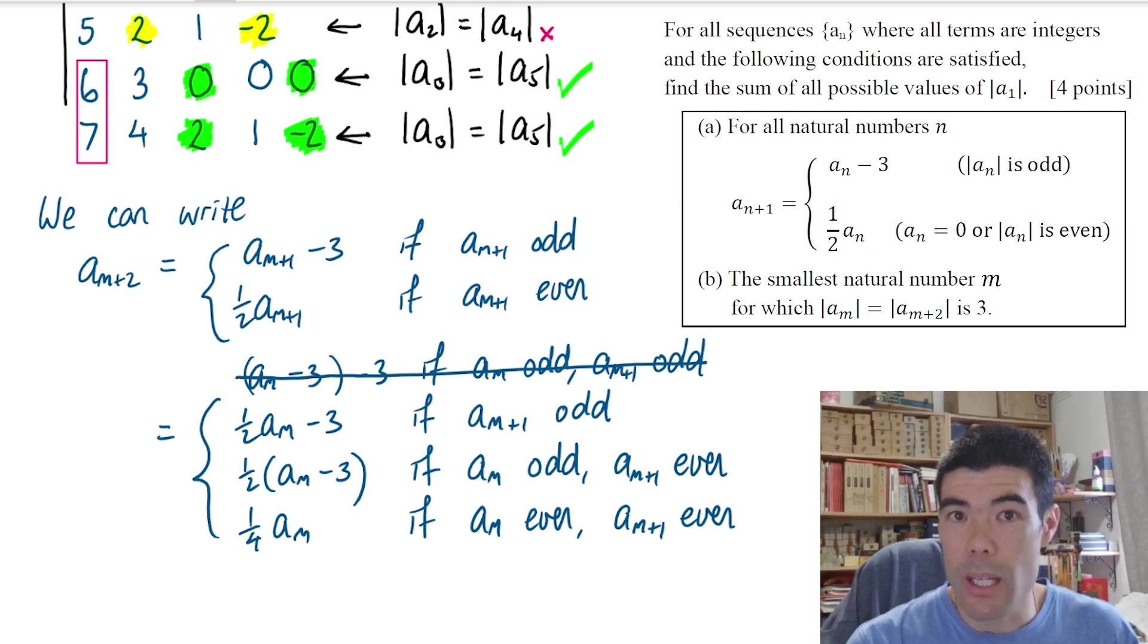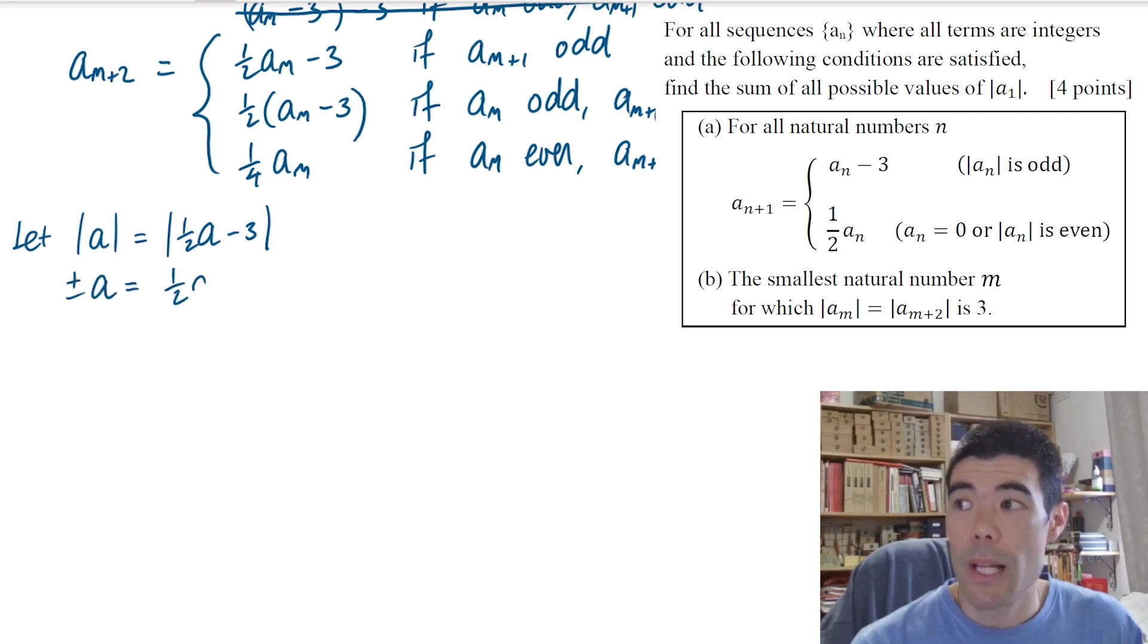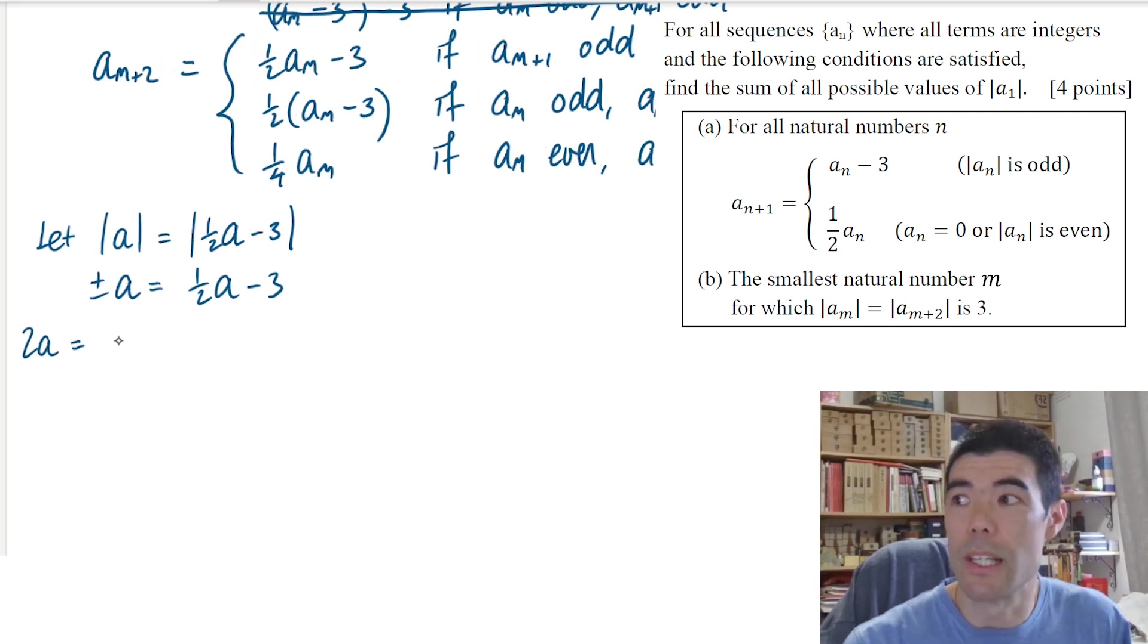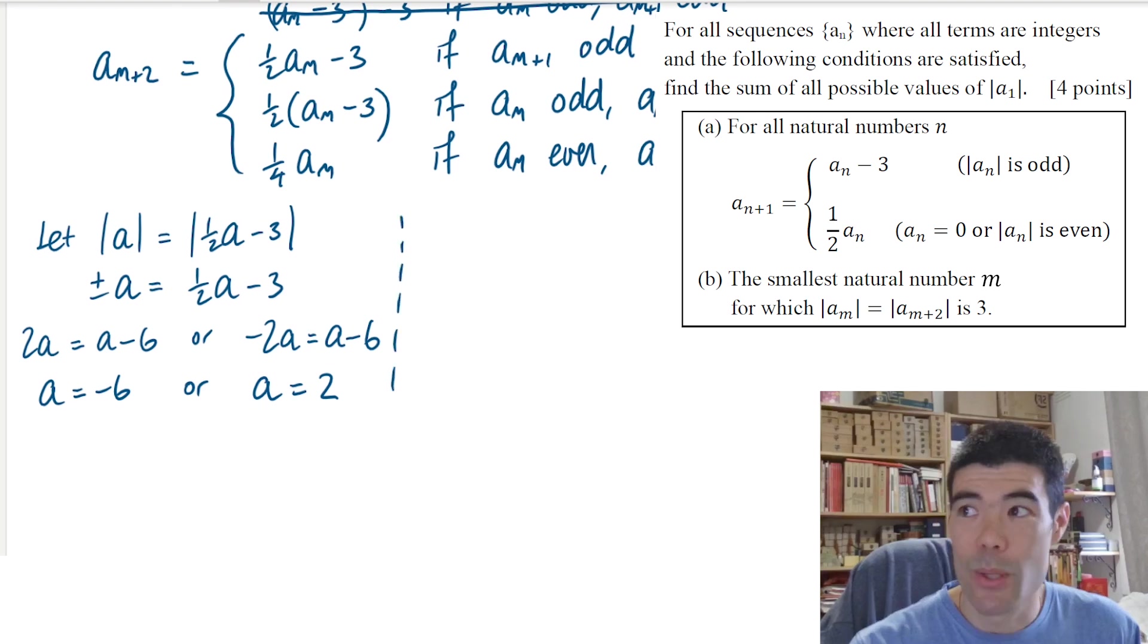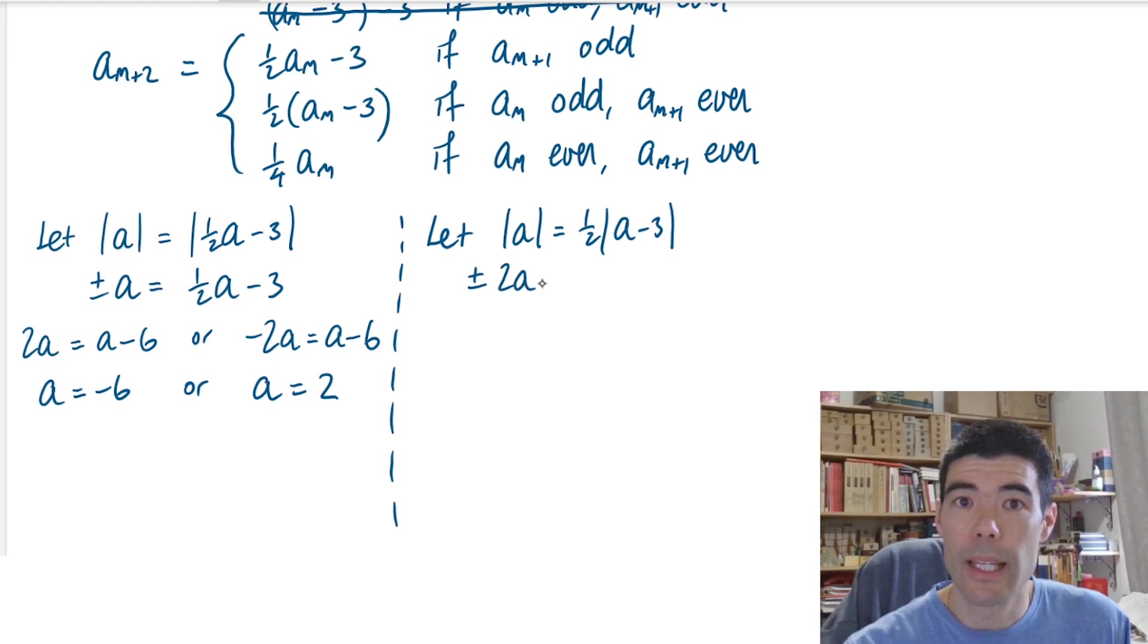But we want these to be equal in absolute value. So let's just get rid of the subscripts and call them both a. We want to solve this equation. This is for the first case. Getting rid of the absolute value sign, we can have plus minus a is equal to half a minus 3. We get two cases. So solving each of these linear equations separately, I'm going to get two possible values for a. One of them is a equals negative 6, and the other one is a is equal to 2. Okay, good. So let's do a similar thing for the second case. We'll have |a| = 1/2 |a - 3|. Again, solving two linear equations gives us two cases. A could be negative 3 or a could be positive 1.